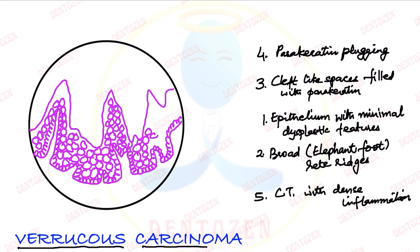On the surface of the epithelium we can see clefts between the epithelial projections — that's why the term 'verrucous.' These clefts are filled with a lot of keratin — parakeratin.